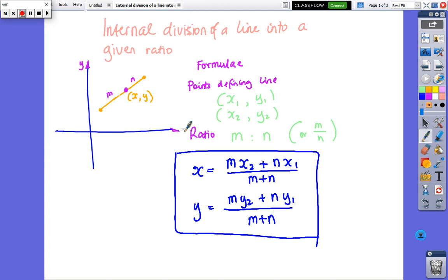Okay, we're looking at a video on the internal division of a line into a given ratio. So, we've got two points, a point here and a point here, and we want to divide that interval, that line, into a ratio of m to n by this point here, and try and find it.